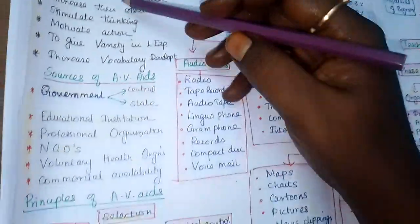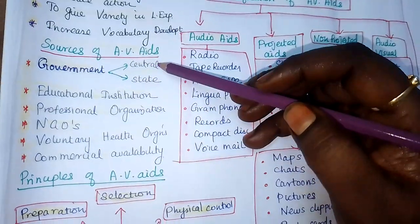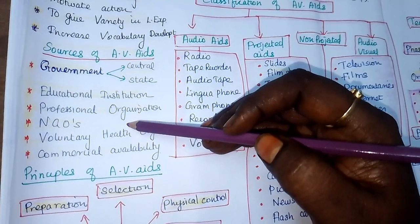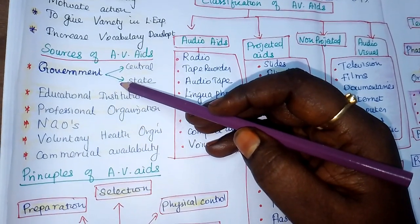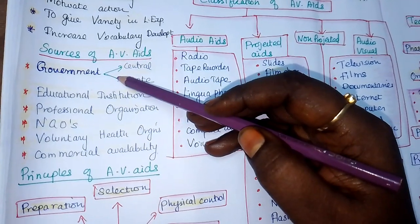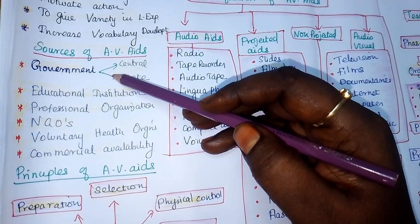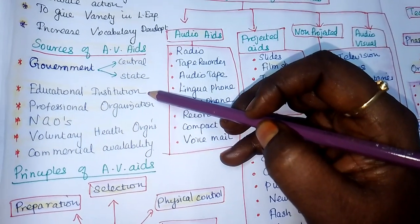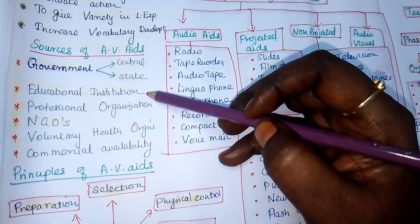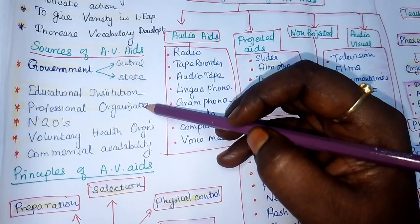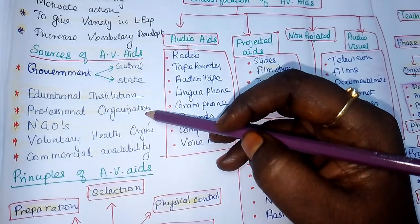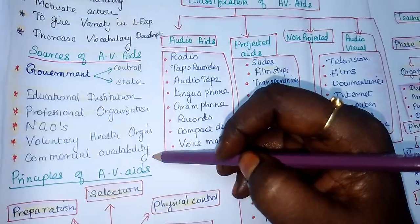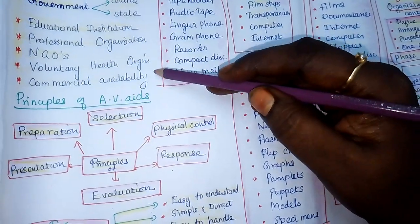Where are AV aids available? Some ready-made AV aids are available. The government supplies AV aids to primary health care centers and sub-centers. You may have seen governmental posters; central and state governments provide them. Some educational institutions prepare their own AV aids — puppets, charts, posters, CDs, and software. Professional organizations, NGOs, non-governmental organizations, and voluntary health organizations also provide them. Commercially available AV aids are not acceptable for nursing students — teachers expect you to prepare your own.